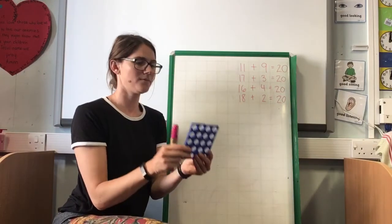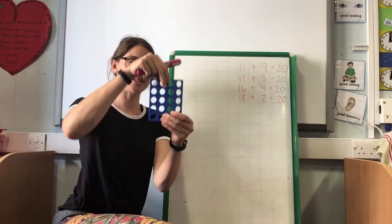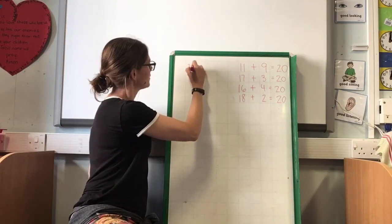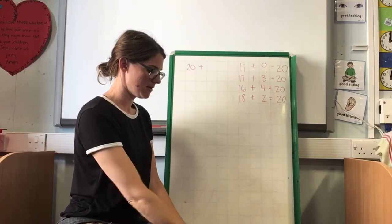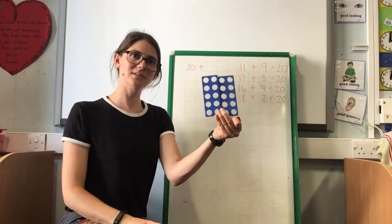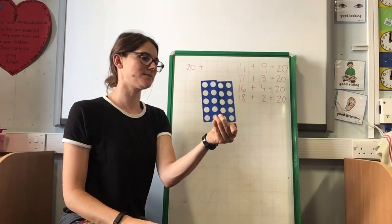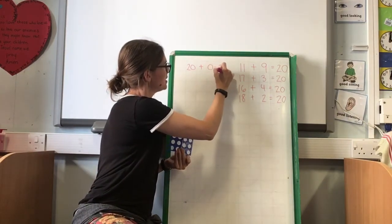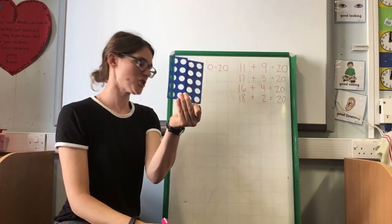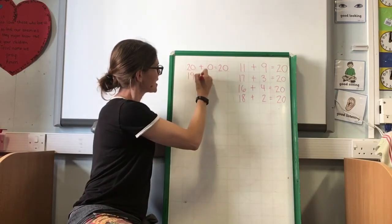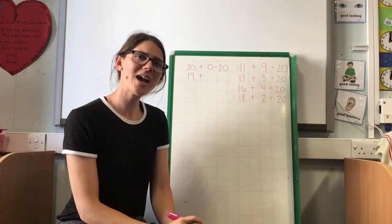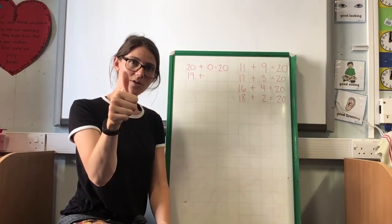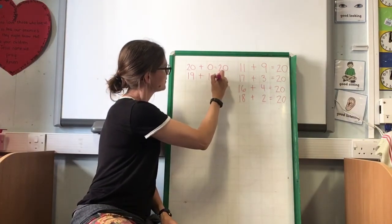So let's start with 20. We have 20. How many more do I need to make 20? I've got 20 — how many more do I need? I don't need any more, do I? So 0. I need 0 to make 20. Let's see — if I took one of those away, I started with 19 instead. If I had 19, how many more do I need to make 20? I could put 19 in my head: 19, 20. How many more did I add on? Just one more. Equals 20.